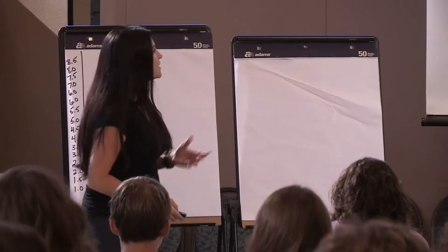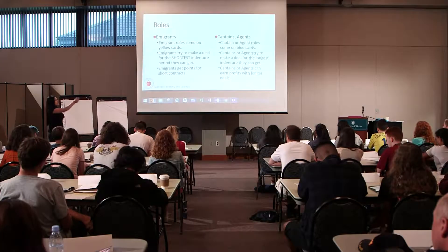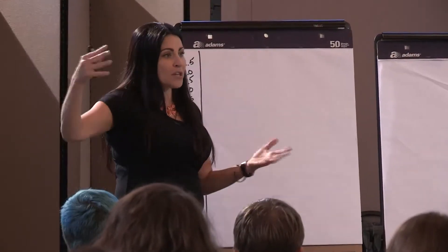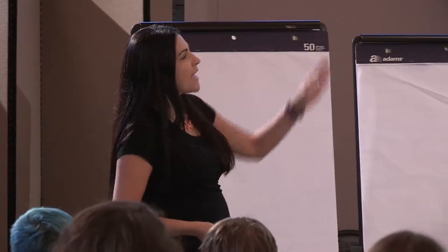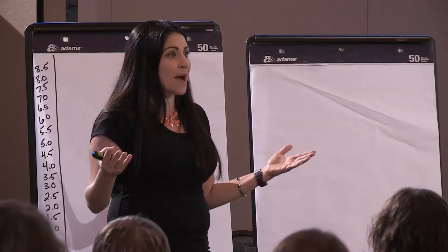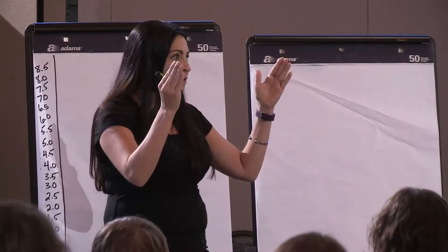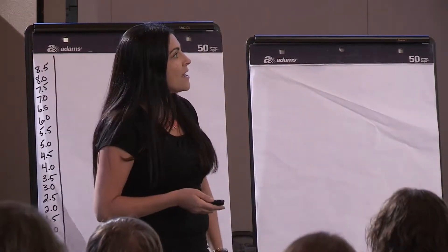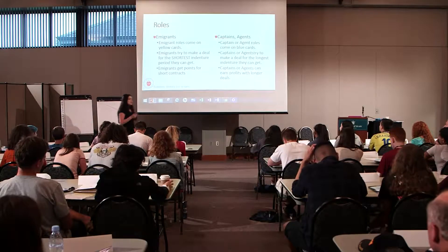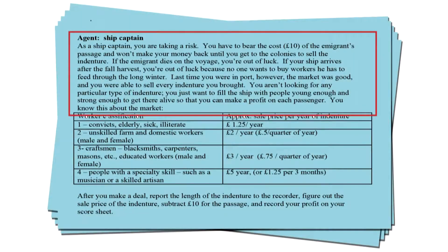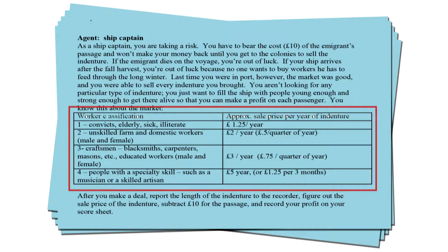On the other side of the room we have captains or agents. These could be ship captains or agents contracted to go out and find labor. Agent and captain role cards are blue, and they are trying to make a deal for the longest term possible, because the longer the contract, the more valuable it is to sell to a potential buyer. You can earn profits with longer deals. Your blue card explains what you're looking for, where your ship is going, how much it's worth to you, and how much different types of labor are worth to you.